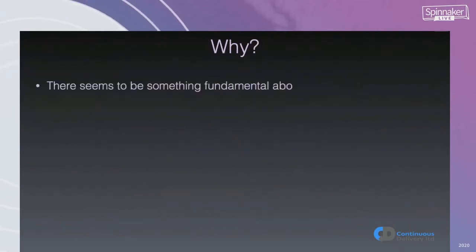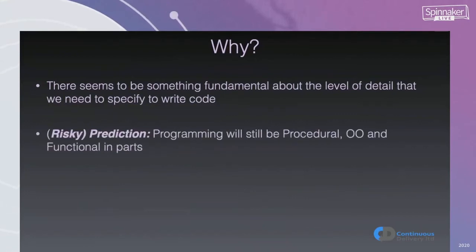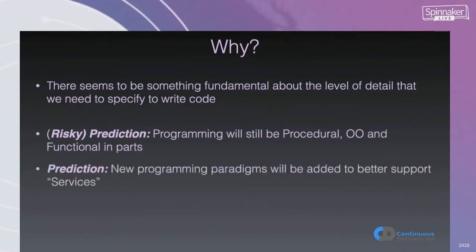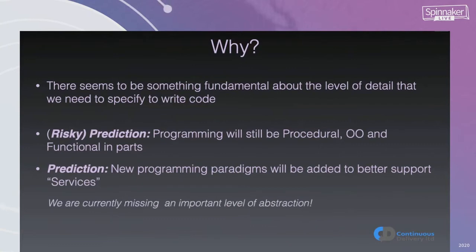Why do I think that's the case? To me, there seems to be something fundamental about this level of detail we need to specify to write code. My very risky prediction for 100 years' time is that programming will still be procedural, will still encompass some object orientation, and will still be functional in parts — these techniques are useful in different contexts. New programming paradigms may be added. One gap I see is that most systems have the idea of services, yet services are not ideas that surface at the level of programming languages. I expect that people will invent something that allows us to talk about and encode services more than we do today as a common part of our development practice.